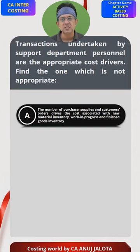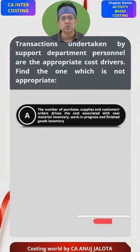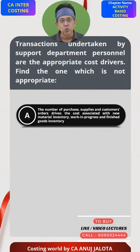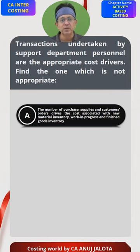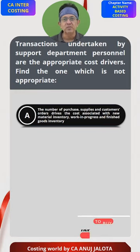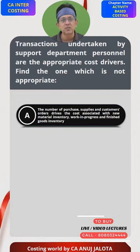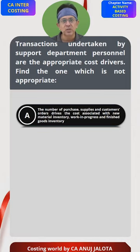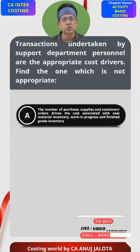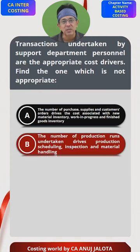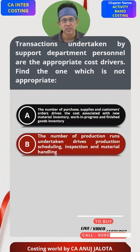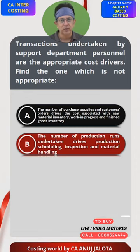Option A: the number of purchase supplies and customer orders drives the cost associated with new material inventory, WIP, and finished goods. This makes sense because if customer orders are more and your purchases are more, your raw material inventory, your WIP, and your finished goods inventory costs will also be increasing. So A makes sense.